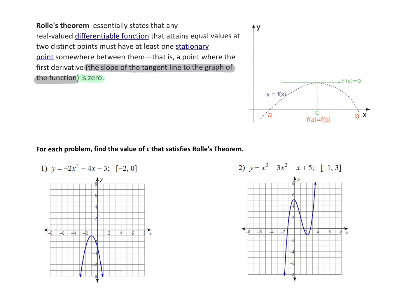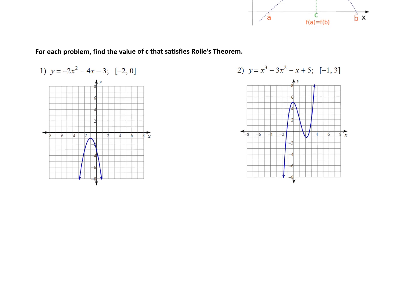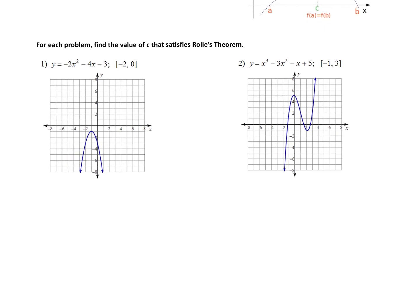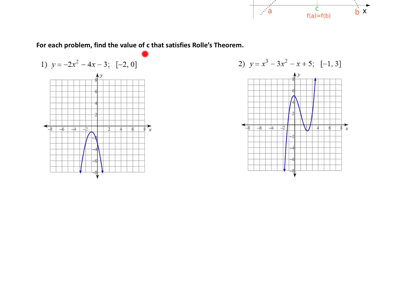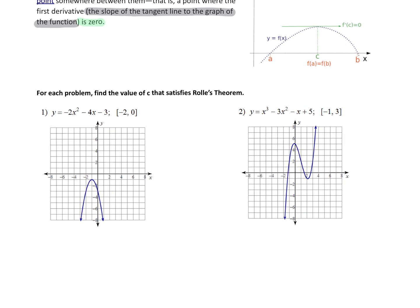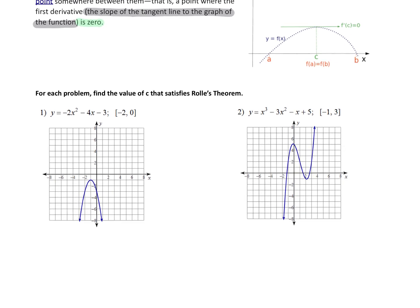So what am I going to ask you to do? For each problem, find the value of c that satisfies Rolle's Theorem. So basically I'm asking you to find the value for c here in the middle where my tangent line is zero. You're given two points of an interval, A and B, so this point is negative two and zero. Let's see if we can do this graphically.